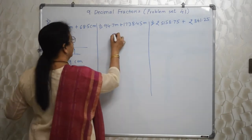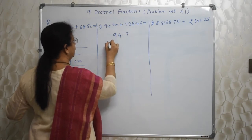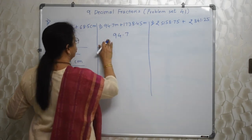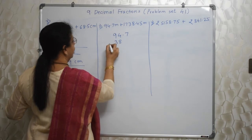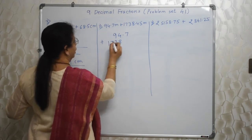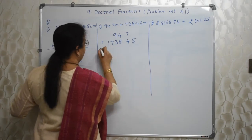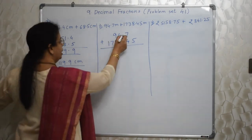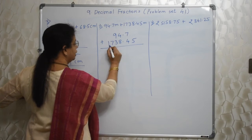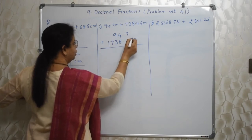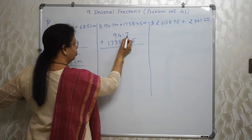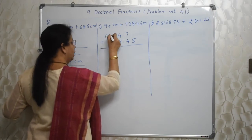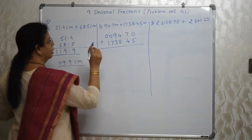Chalo, aage padhte hain. 94.7 plus 1,738.45. So kaise likhna hai? 38 yeh iske niche aayega. 17 will come here. And this is addition — 0.45. Yeh agar barabar likhte ho bacche log, toh aapka answer correct hi aane waala hai. Decimal ke niche decimal. 94 ke niche 38 aayega, 17 nahi. Aur 7 ke niche 5 nahi aa sakta — 4. Decimal ke baju wala number ek doosre ke niche. Agar possible hai, toh yeh 0s karke fill up kar sakte ho, so that confusion is reduced.